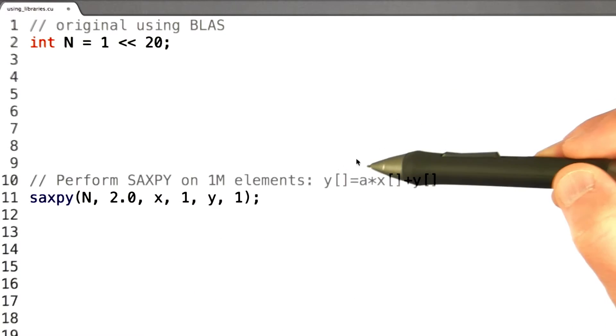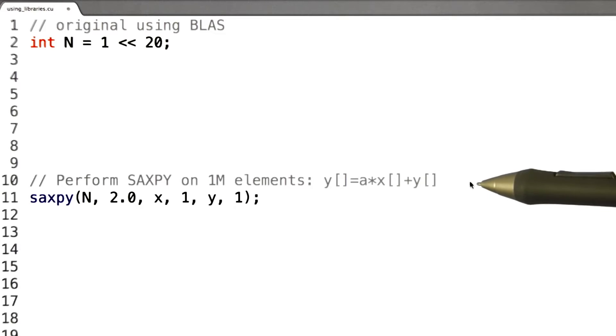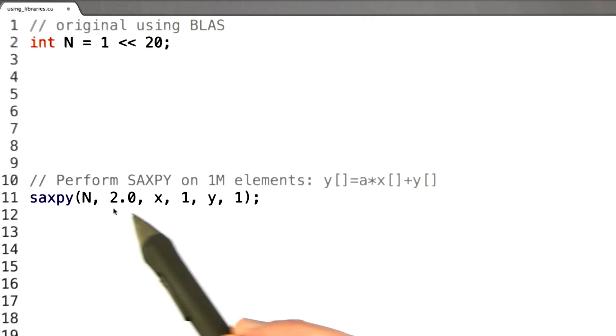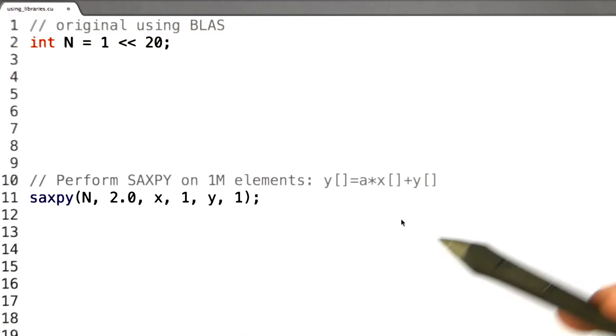So we're going to set y equal to ax plus y by calling SAXPY, and we're going to do this on a million elements, or more exactly n elements. So here we're going to say y is equal to a, which is 2.0, times x plus y.